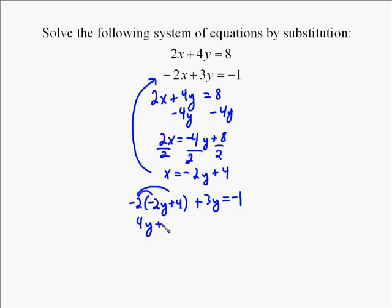Negative 2 times negative 2 is a positive 4y. Negative 2 times 4 is a negative 8. And then plus 3y equals negative 1. We simplify the left side. 4y plus 3y is 7y. So you've got 7y plus negative 8 equals negative 1.